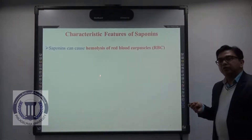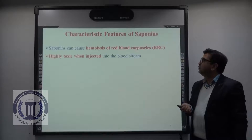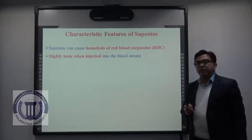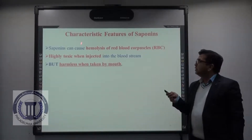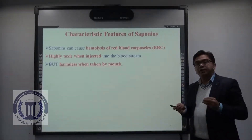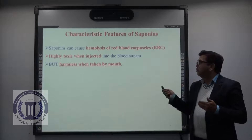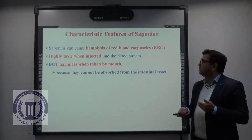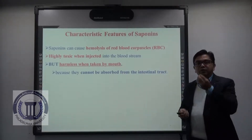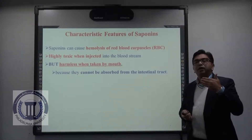Saponins can cause hemolysis of red blood corpuscles and destroy them. Hence, they are highly toxic when injected into the bloodstream. However, saponins are harmless when taken by mouth — they can cause hemolysis of RBC only when injected directly into the blood. The reason they are harmless when taken orally is that saponins cannot be absorbed from the intestinal tract, so they cannot cause hemolysis of RBC when ingested.